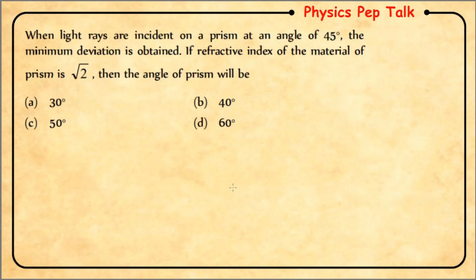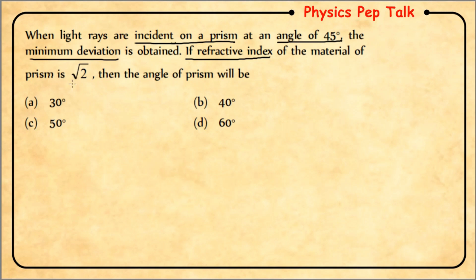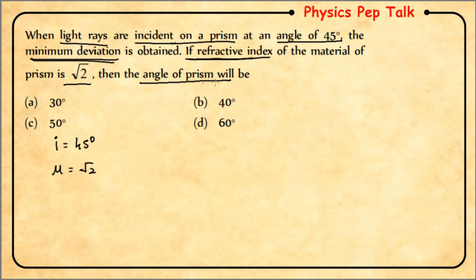Next question: when light rays are incident on a prism at an angle of 45°, minimum deviation is obtained. If the refractive index of the material of the prism is √2, then the angle of the prism will be? Given: I = 45°, μ = √2. We need to find A.